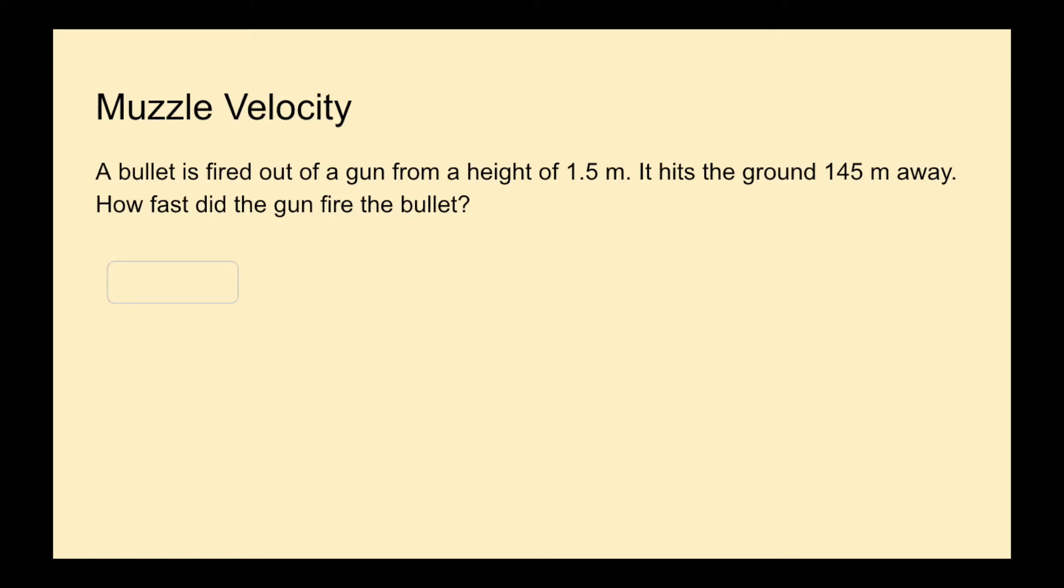A bullet is fired out of a gun from a height of 1.5 meters. It hits the ground 145 meters away. How fast did the gun fire the bullet?